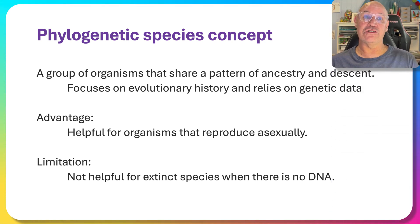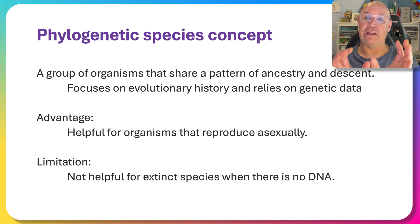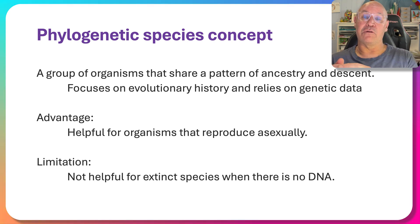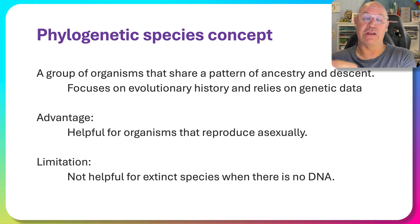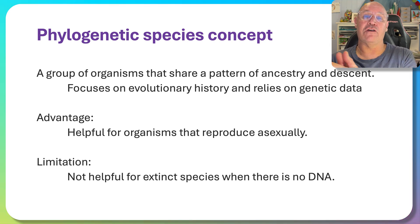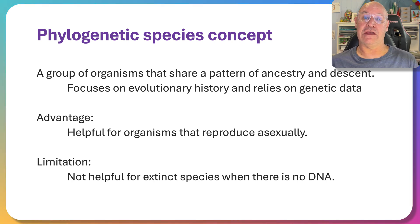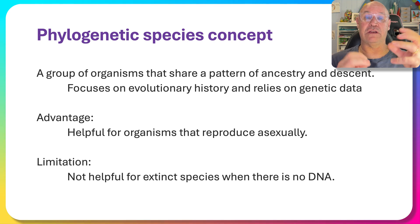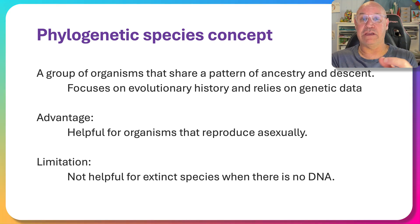Given those limitations, that's why we have different species concepts. A solution is the phylogenetic species concept, which looks at the similarity between two organisms based on their genetics. It compares the genetics of two organisms to determine how similar their genes are and to determine their evolutionary history. It's ideal for asexually reproducing organisms like bacteria, because we can extract and compare their DNA.